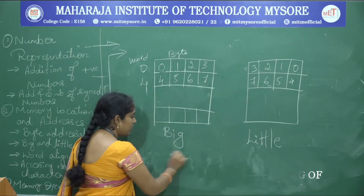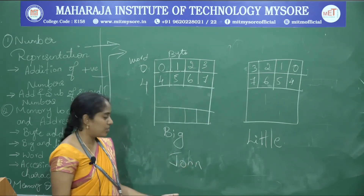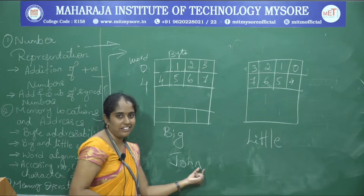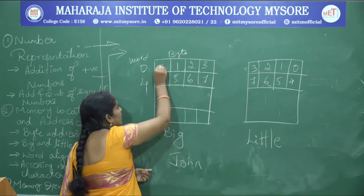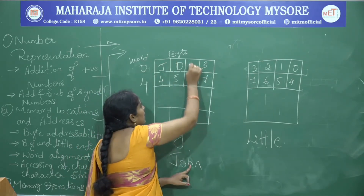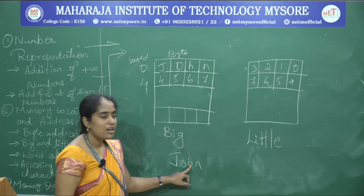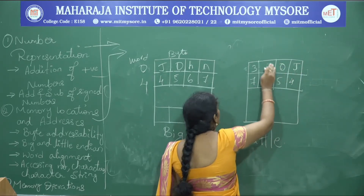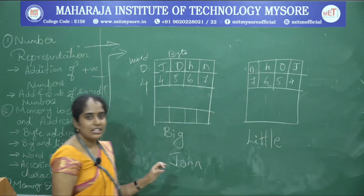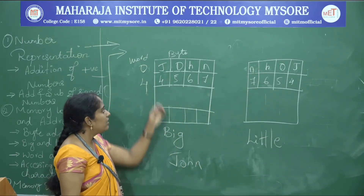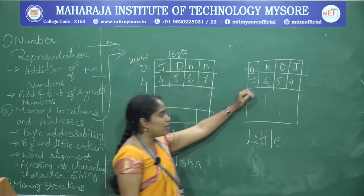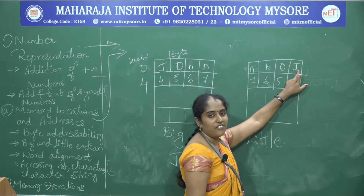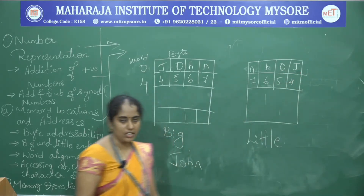For example, storing the string 'John': in big endian, J is stored at the smallest address, followed by O, H, N. In little endian, J is stored at the rightmost (least significant) position. So in big endian the most significant byte has the smallest address, and in little endian the least significant byte has the smallest byte address.